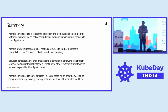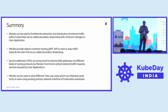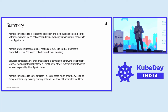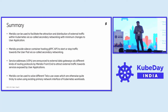Meridio can solve different telco use cases that are quite tricky to solve using the existing primary network interface of Kubernetes workloads. Many telco workloads benefit because what you get out of Kubernetes by default is the primary interface, and use cases like high-performance user-plane traffic are still tricky to solve through it. You need a secondary interface through which high-speed data can reach your application.